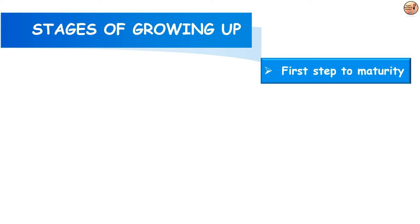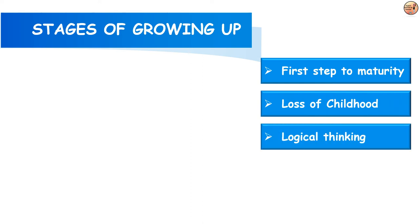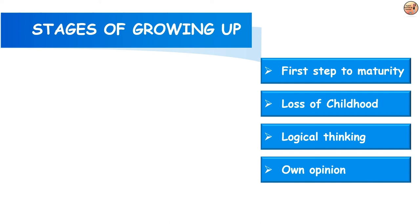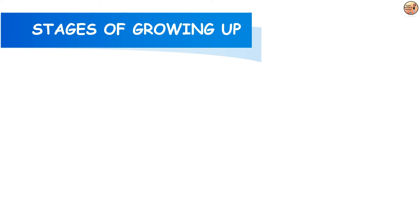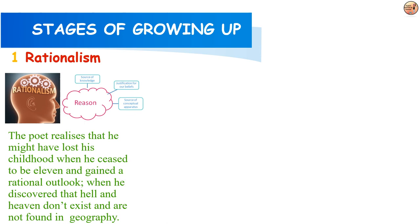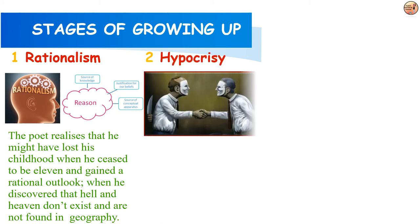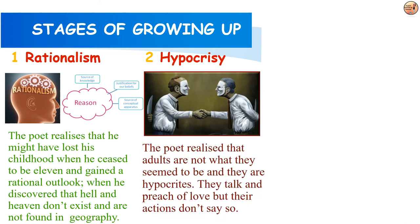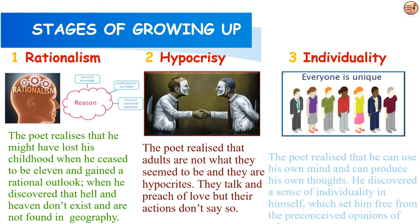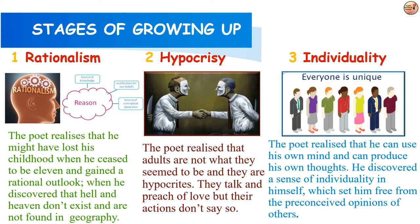The first three stanzas describe the first step to maturity — the loss of childhood — as when one is able to think logically and rationally, forming one's own opinions and not getting influenced by others. The first stanza talks about rationalism; the poet lost his childhood when he ceased to be eleven and realized hell and heaven do not exist in geography. Stanza 2 deals with hypocrisy, and stanza 3 deals with individuality — the poet can use his own mind and produce his own thoughts.